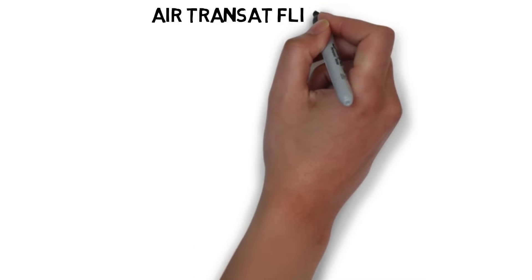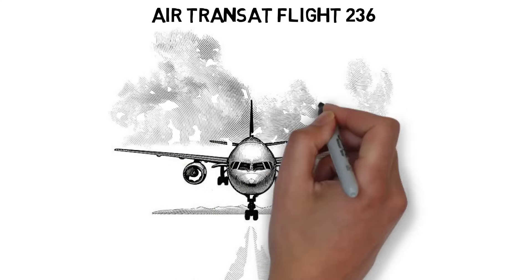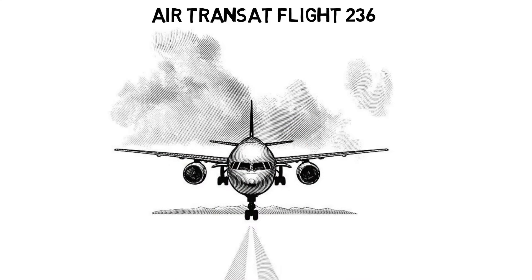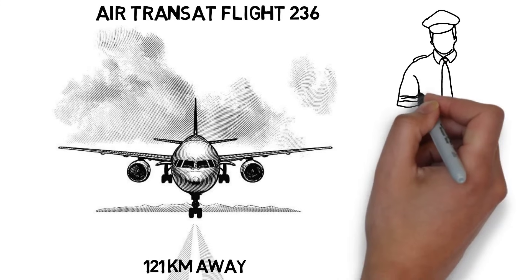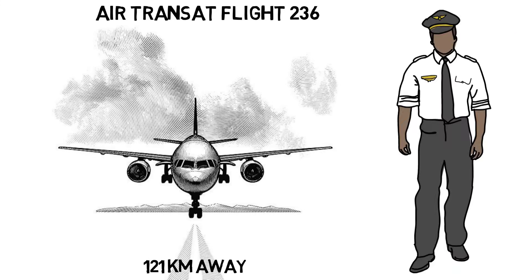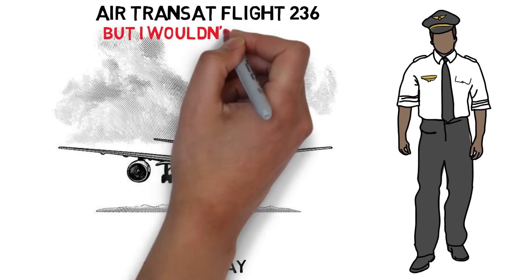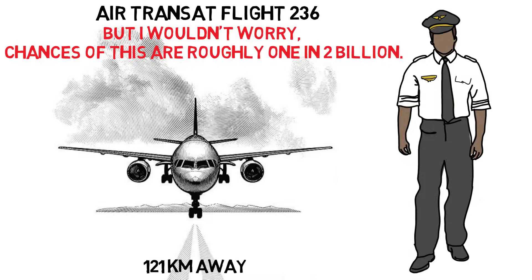Air Transat Flight 236 lost all power over the Atlantic Ocean and was able to glide to a safe landing at a nearby runway 121 kilometers away. The pilot even had to circle the runway because the plane still had too much altitude by the time it arrived. But I wouldn't worry. Chances of this are roughly one in two billion.